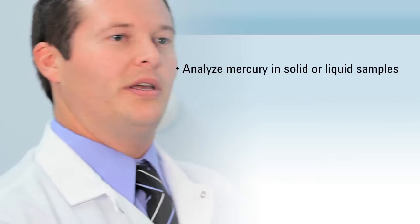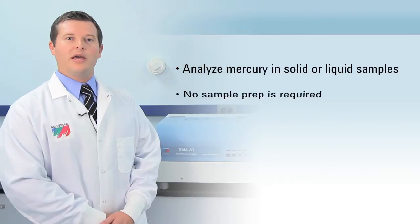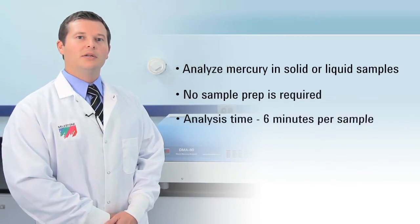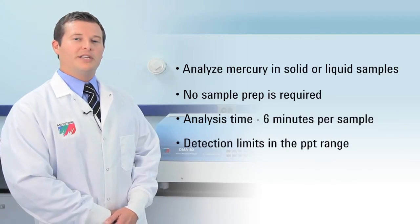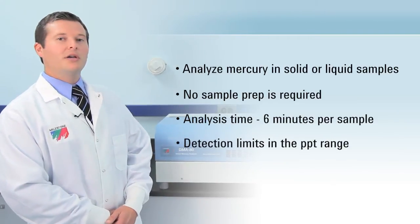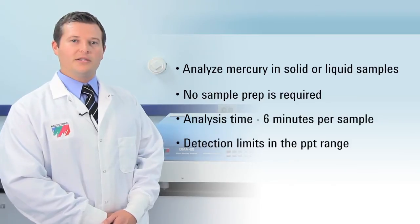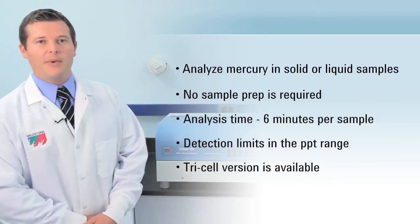The DMA80 can analyze mercury in solid or liquid samples, and no sample prep is required. Total analysis time is approximately six minutes per sample. Detection limits are in the PPT range, and for labs that require higher sensitivity, a tri-cell version of the DMA80 is available.